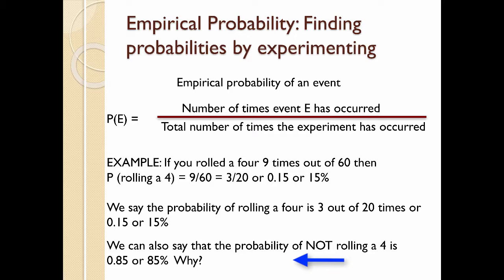Now we can also say that the probability of not rolling a 4 is 85 percent. Why do you think? Well, we'll look at that in a few minutes.